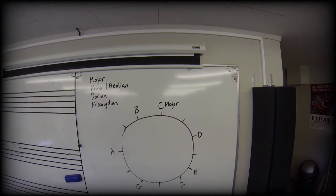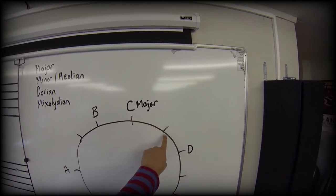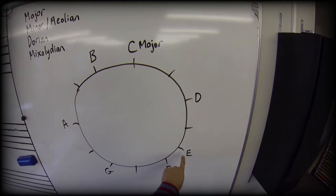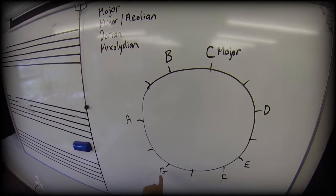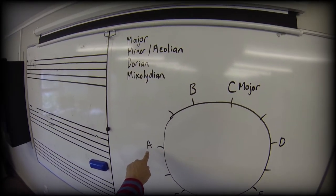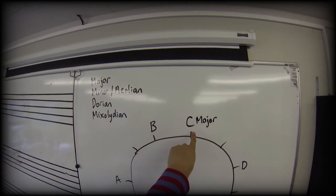So let's look at the step pattern that we use. It's root then two to the D, two to the E, one to the F, two to the G, two to the A, two to the B, and then one to the C again.